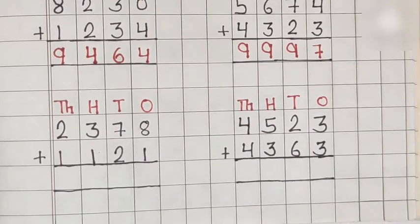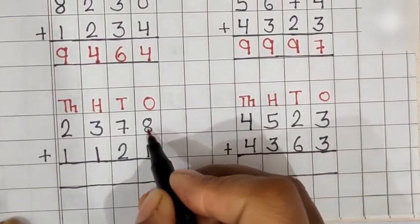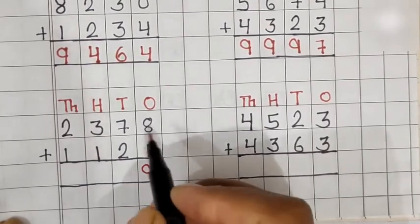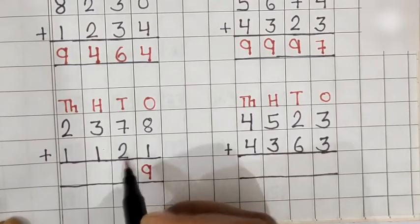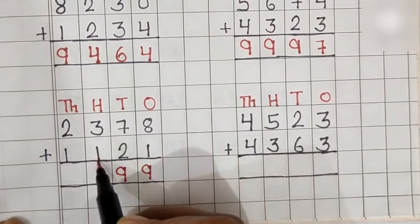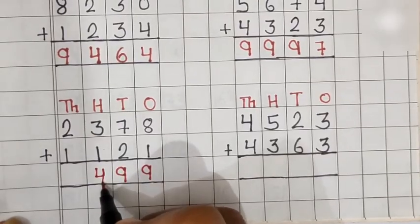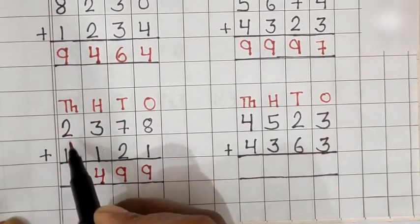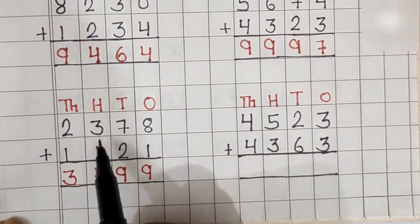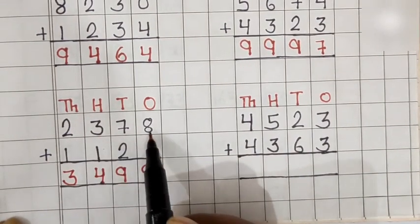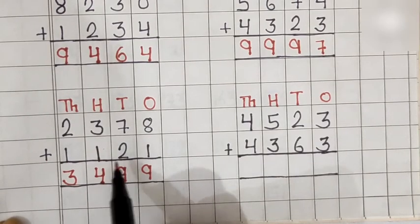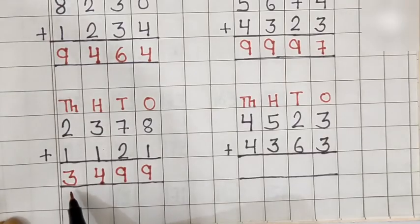Now solve the next example. 8 plus 1 is equal to 9. 7 plus 2 is equal to 9. 3 plus 1 is equal to 4. 2 plus 1 is equal to 3. So, 2,378 plus 1,121 is equal to 3,499.